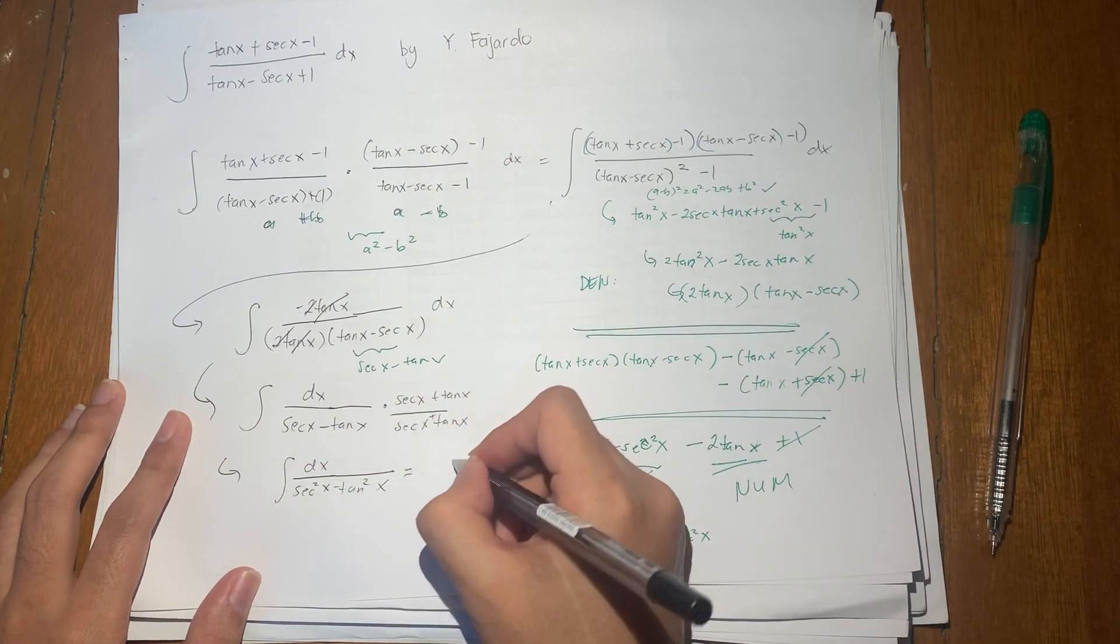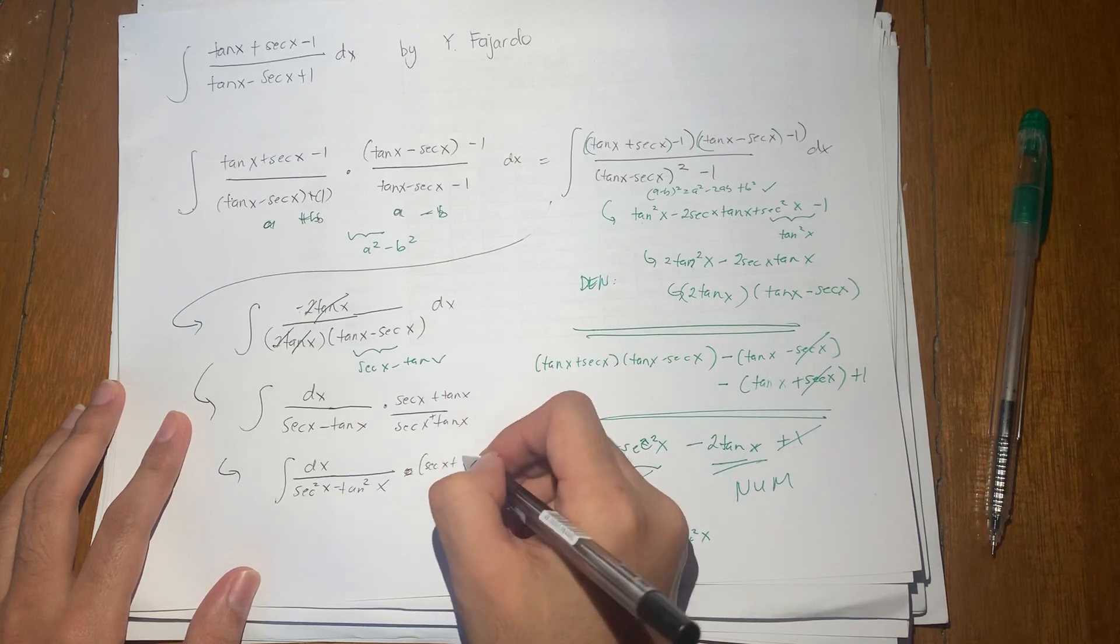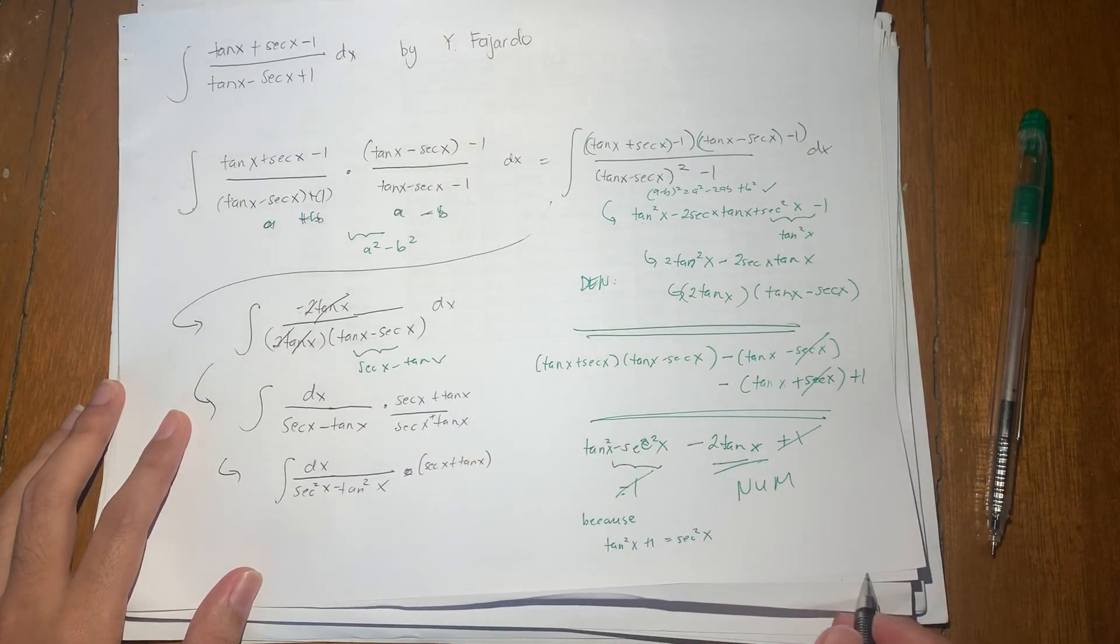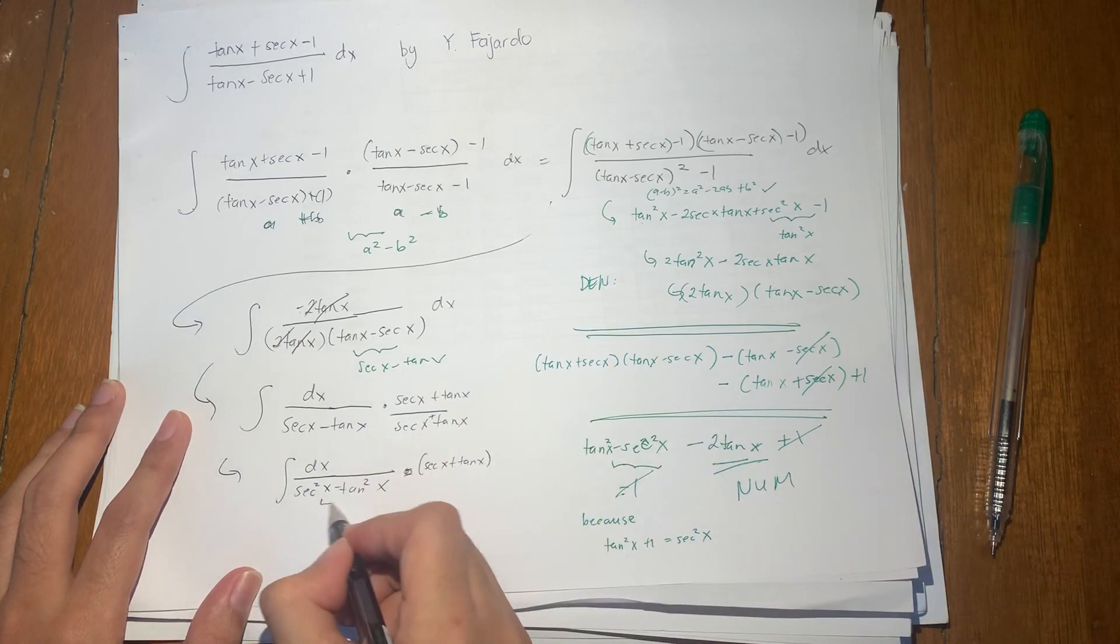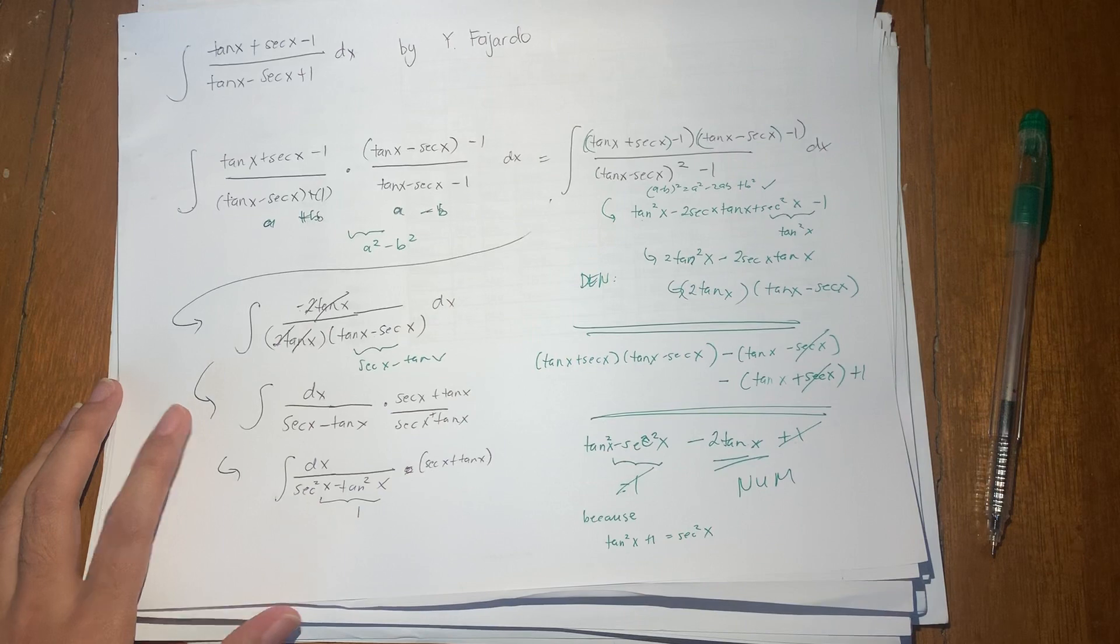So this simplifies out... oh, I forgot the secant x plus tangent x in the numerator. There. So again, this one, we keep repeating, this one is always equal to 1 by the Pythagorean identity.